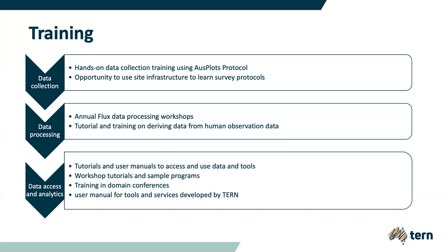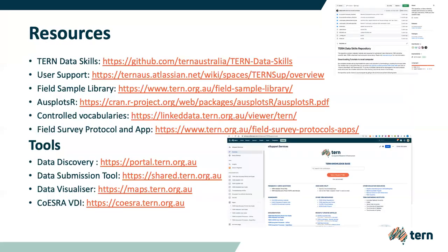The third category of training is related to data accessibility and analytics. TURN maintains a comprehensive knowledge base and GitHub repository to document user guides for multiple tools and services. The GitHub repository has a copy of sample programs and all the materials used in previous training workshops. We have user manuals for most of the tools in the knowledge base. In addition, TURN runs regular training courses at the annual Ecological Society of Australia conferences. I strongly encourage participants to explore these links.